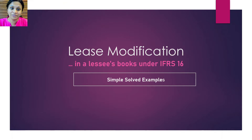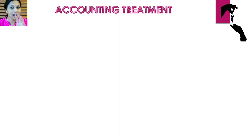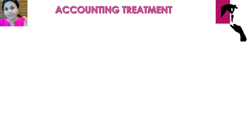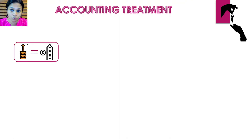Before going into this video, it will be great if you watch the earlier one so that you are clear on the concept and have an idea about the accounting treatment. Before we get into the example, I would like to do a quick recap of the accounting treatment. When there is a lease modification, after assessing whether the contract is still a lease or not, you need to check if there is an increase in scope.